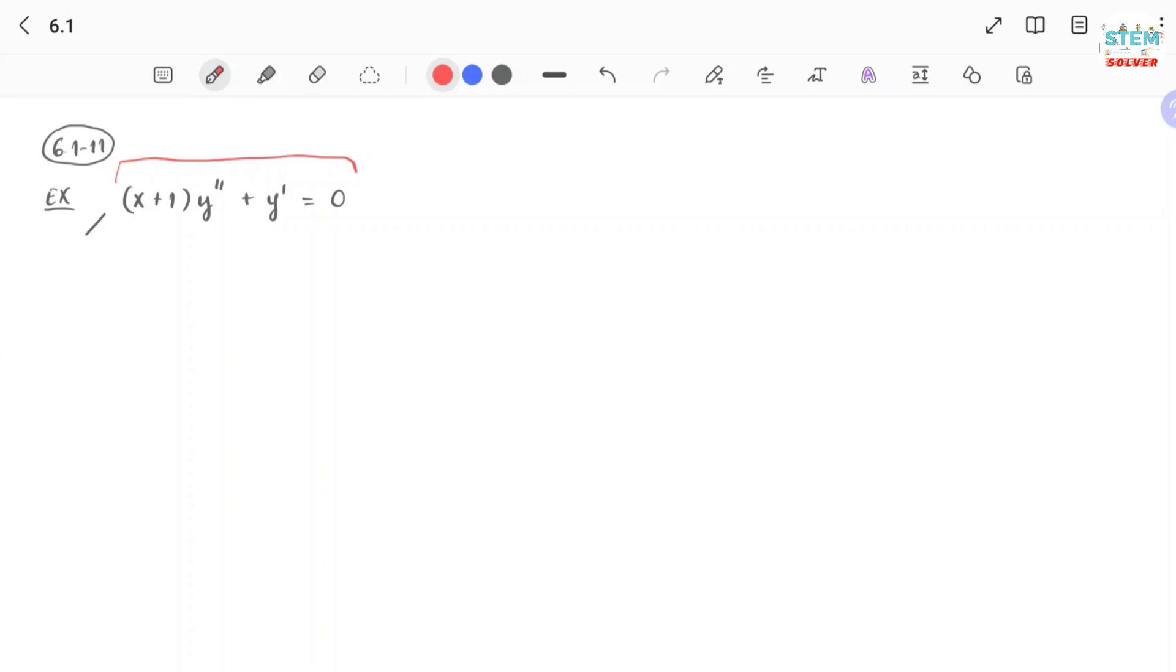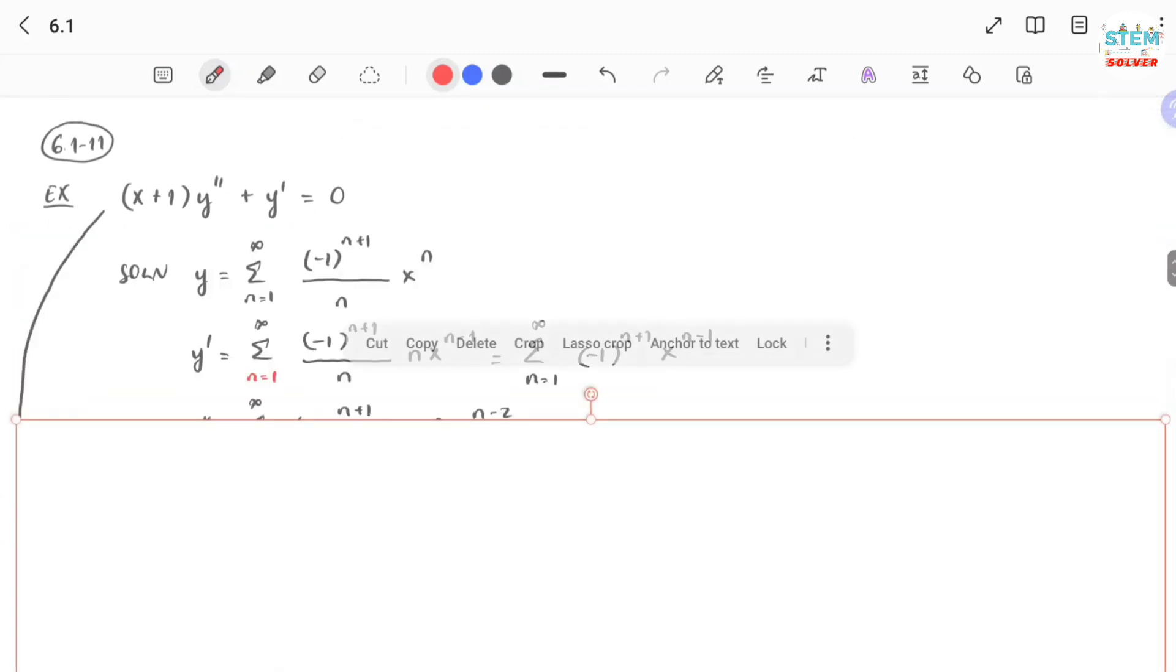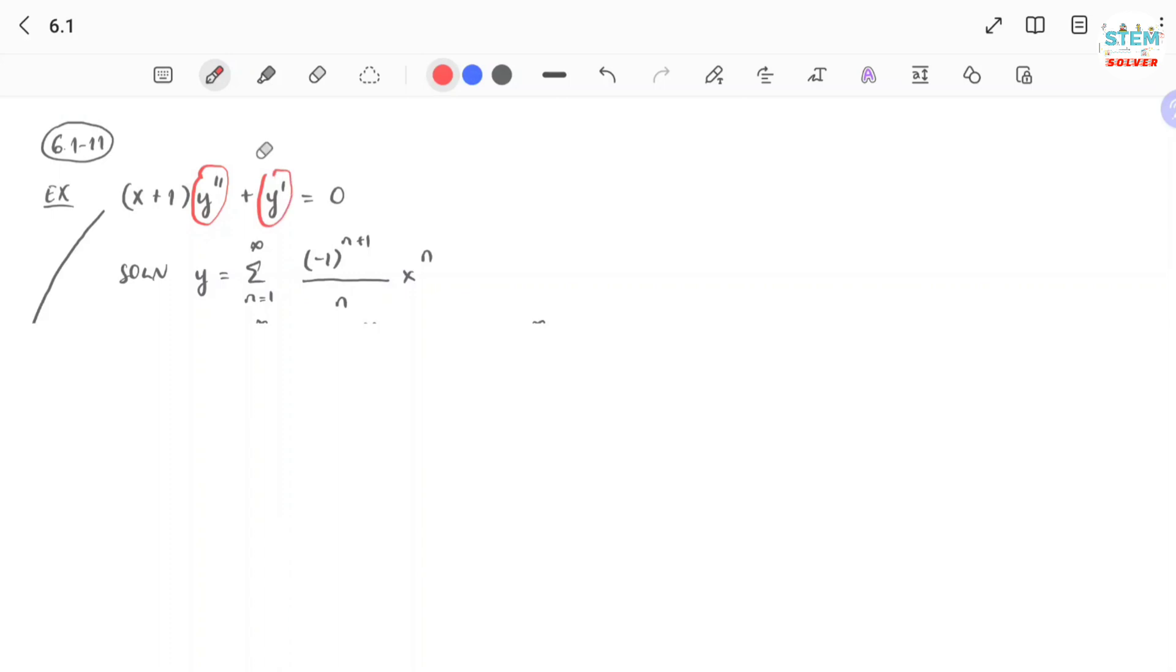So I have this example: (x+1) times y double prime plus y prime equals 0. And you are given a single solution as y equals the power series from n=1 to infinity, (-1)^(n+1) over n times x^n. So I have a second derivative here, first derivative here, and I'm given a single solution.